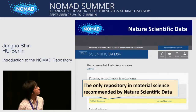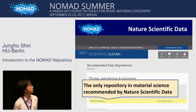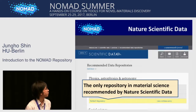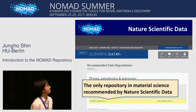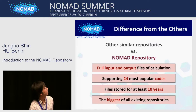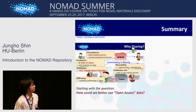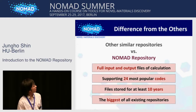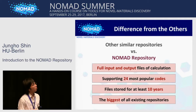Creating your DOI using our NOMAD repository is very valuable. NOMAD repository is the only repository in materials science recommended by Nature Scientific Data. There are other reasons to use it too: we provide full input and output files of calculations, we support 24 of the most popular codes, and we guarantee storage for at least 10 years. NOMAD repository is the biggest of all existing repositories in this field.